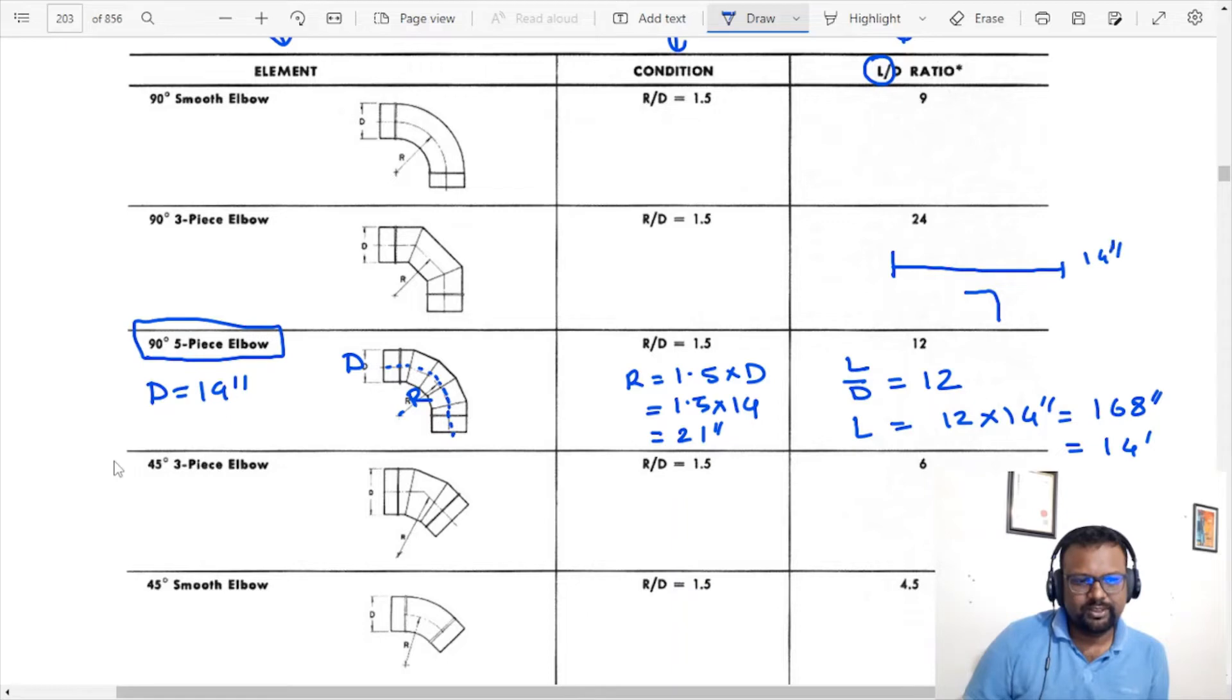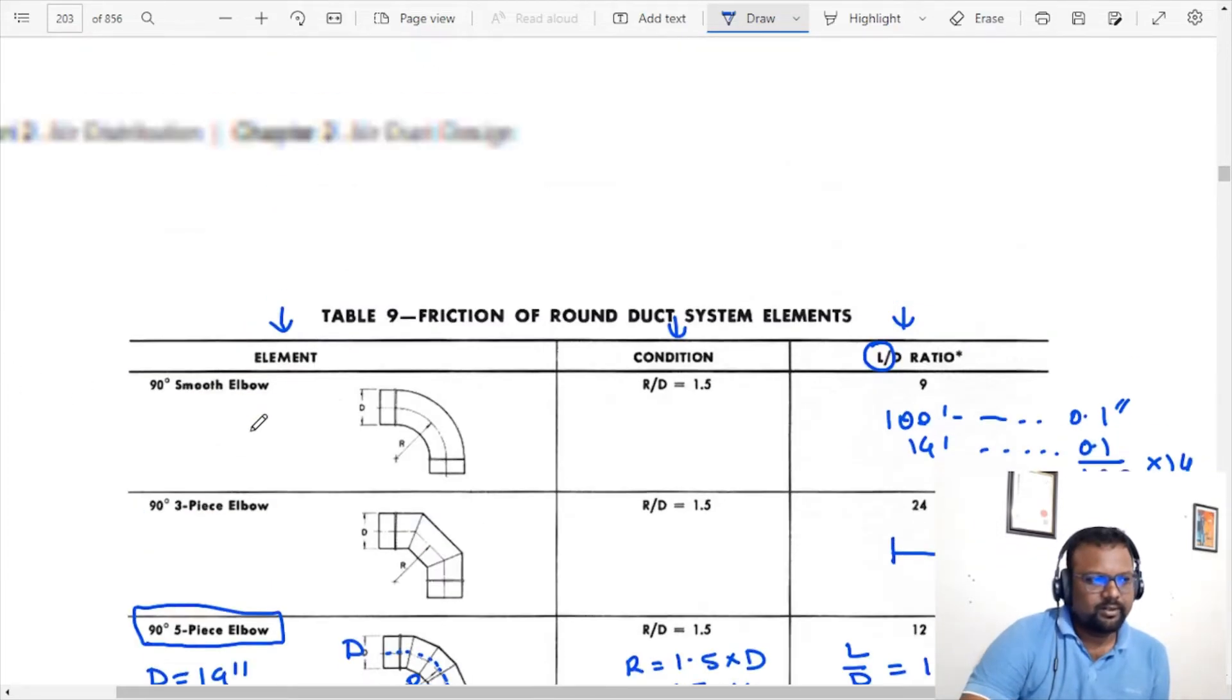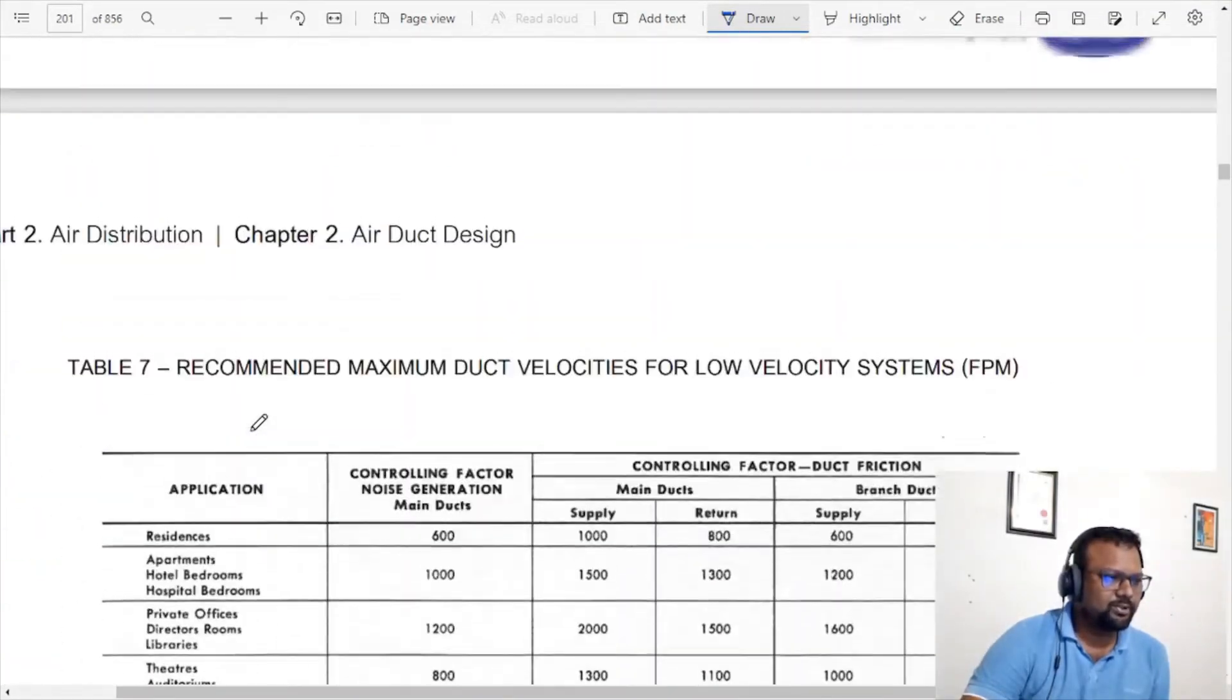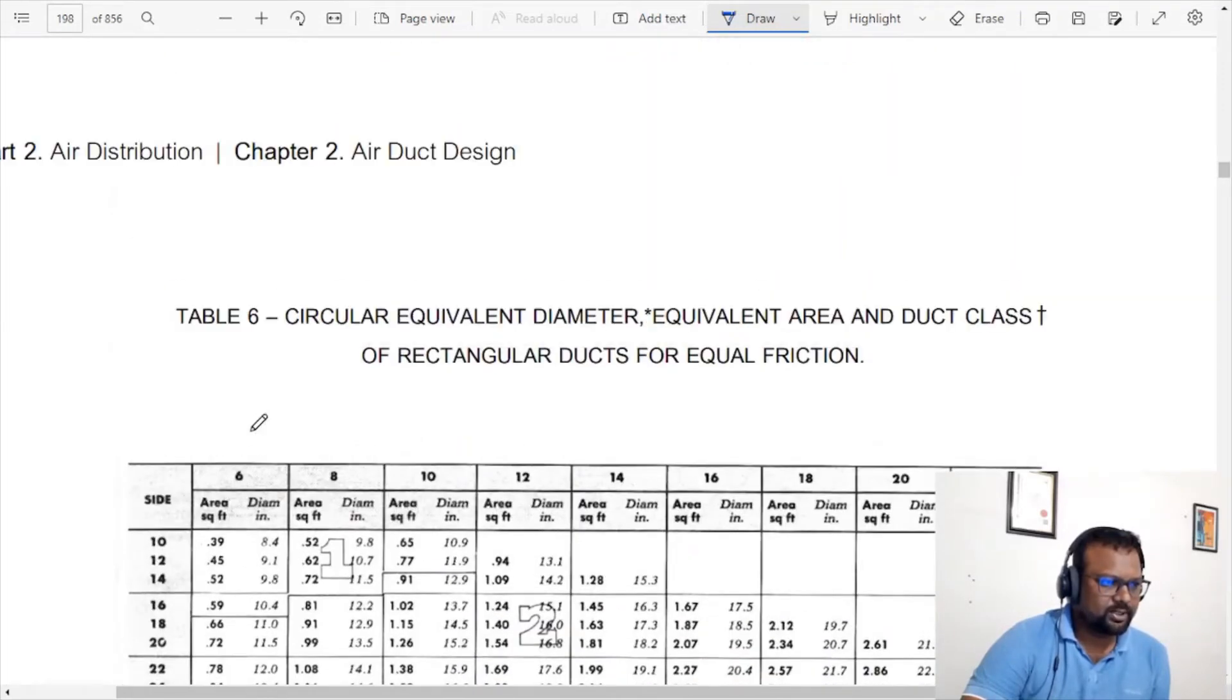We have to get the actual loss. 0.1 divided by 100, multiply with 40. That gives us 0.014 inch, or 0.015 inch. This is from Table 6.